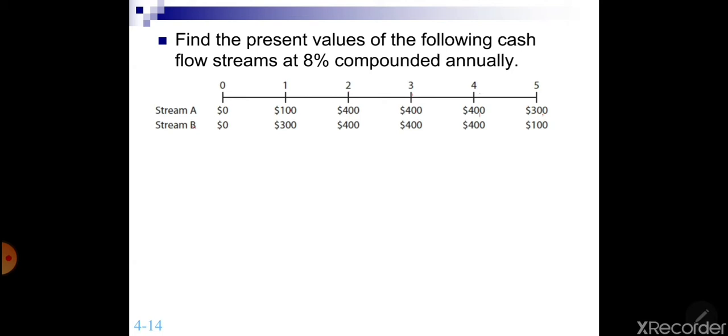You need to find the present value of these cash flow streams at 8% compounded annually. So we will use this formula once again. Remember, this formula is something that can be used in every case. Only equal cash flows have their own specific formulas that are a shorter way of doing that. Now, if we want to use this formula over here, because this is a single cash flow formula, it means that you will have to discount back each and every cash flow and then sum up your answers.